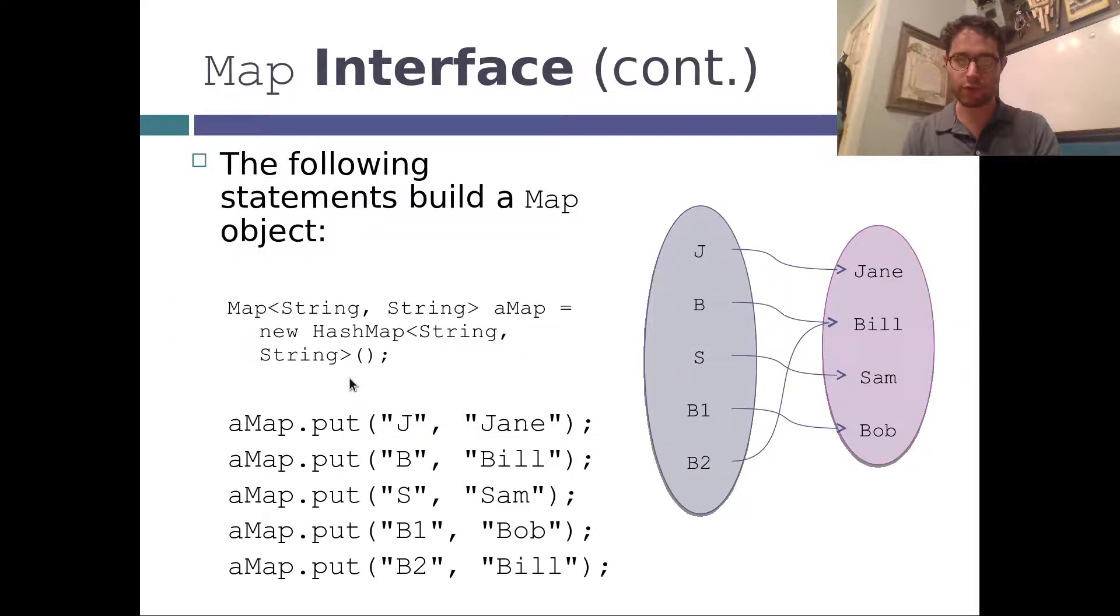Okay. So this mapping over here from the set of keys to the set of values, you would build that with the following operation. So we've got J, B, S, B1, B2. Jane goes to Jane. This is the same one we did before. B and B2 go to Bill. B1 goes to Bob. S goes to Sam. So because we have a key and a value, and they can be completely different data types, we have to use two generics. The generic for the key goes first, and the value goes second.